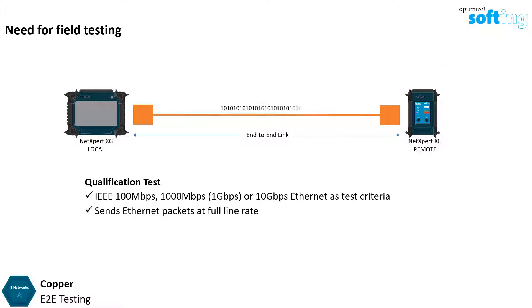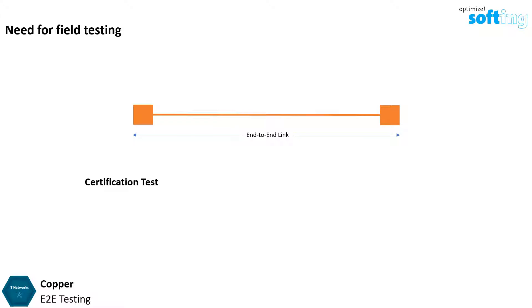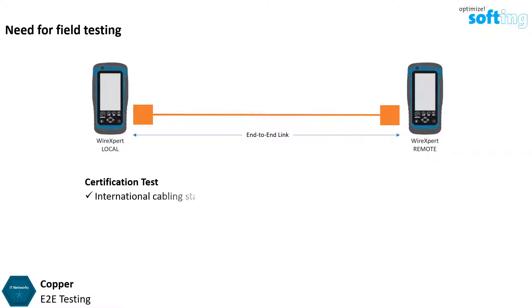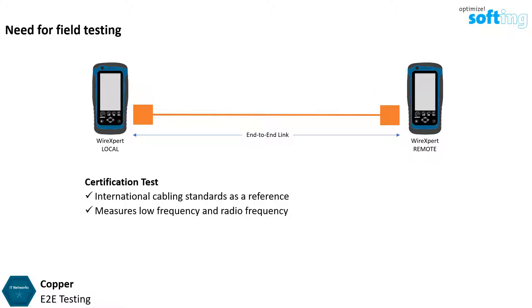A set of testers send Ethernet packets at full line rate and simply test if all packets arrive OK. These testers do not discriminate between permanent link, channel, or end-to-end. Certification test uses international cabling standards as the reference and measures low-frequency and radio frequency parameters at a specified accuracy.